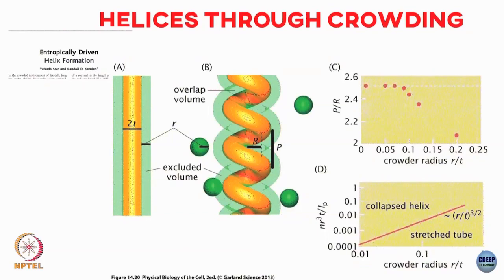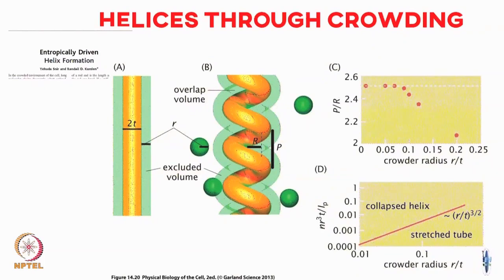For very small crowders, the pitch-to-radius ratio approaches about 2.5. If you look at alpha helices in proteins, the pitch-to-radius ratio is around 2. It is not evidence that alpha helices in proteins are driven purely by this crowding, but it is saying this could be one of the factors that drives alpha helix formation, or in general any helix formation — helices are extremely common in biology, including helical bacterial tails, protein alpha helices, and DNA. Simply by the depletion interaction you can drive a rod-like object into forming a helix.